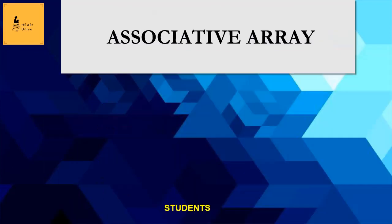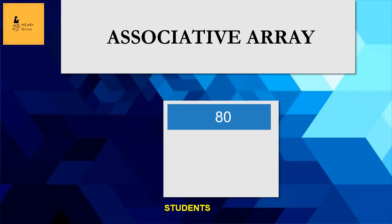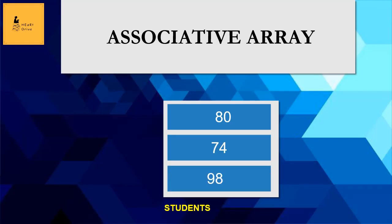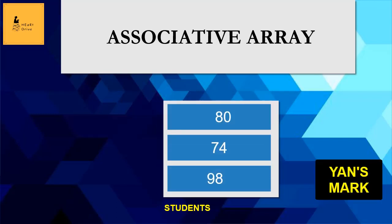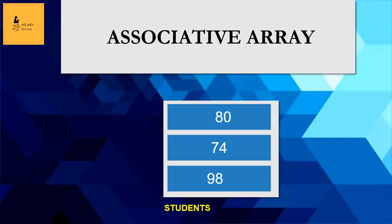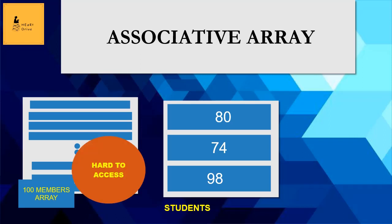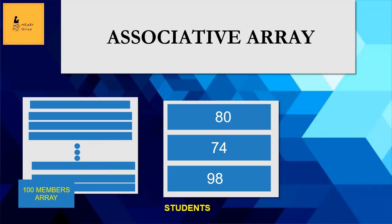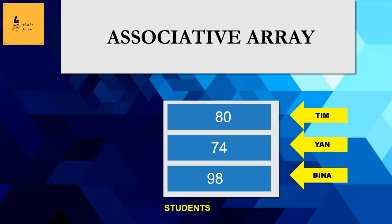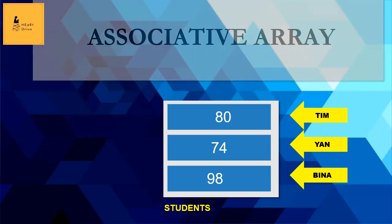For associative arrays, I am creating an array to store the marks of 3 students: Tung, Yarn, and Bina. The marks stored are 80, 74, and 98. If I want the marks of Yarn, it's easy here with just 3 members, but imagine an array of 100 members — it would be hard to remember which index holds Yarn's mark. It would be easier if marks were saved with a key. This method of using key-value pairs in an array is called an associative array.